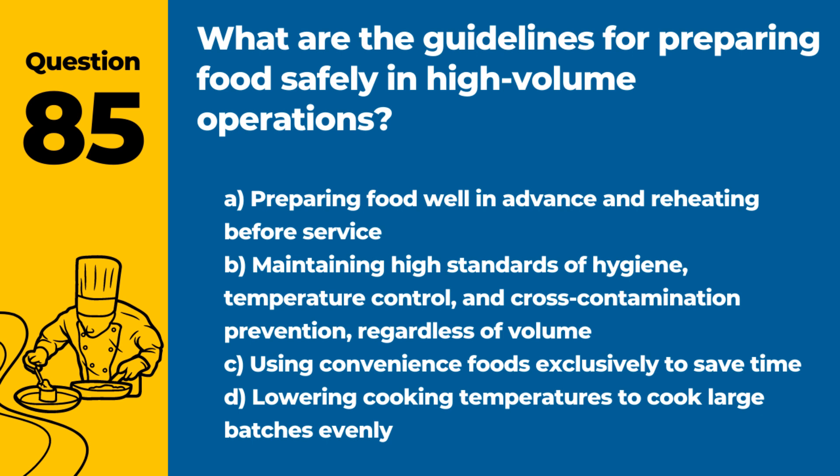Question 85. What are the guidelines for preparing food safely in high-volume operations? Answer: B. Maintaining high standards of hygiene, temperature control, and cross-contamination prevention, regardless of volume. Safety standards must be upheld to protect customers, even in high-volume settings.